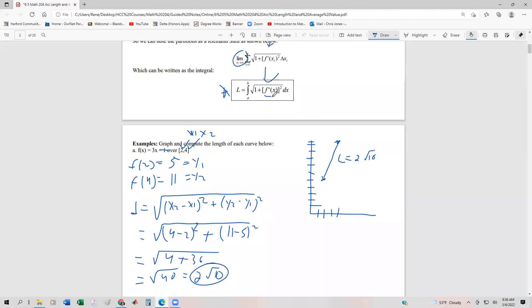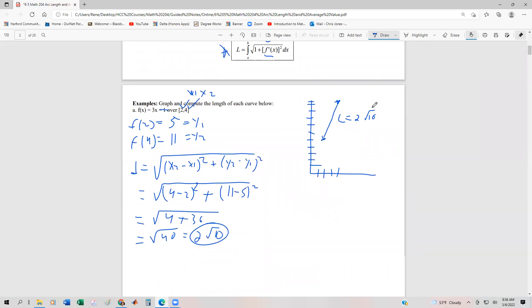So here's how we're going to use the calculus formula. First thing we're going to do, find the derivative. So f prime, if f is 3x minus 1, f prime of x is just going to be 3.